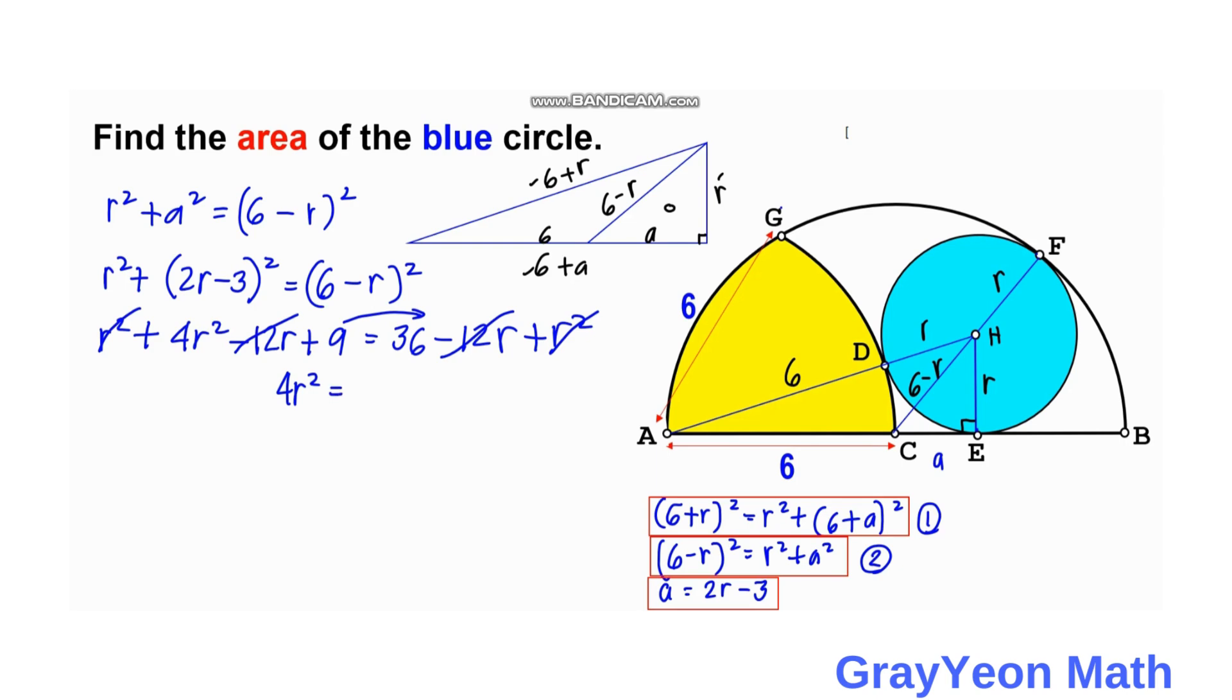So 27. So if we divide both sides by 4, we have R squared is equal to 27 over 4.